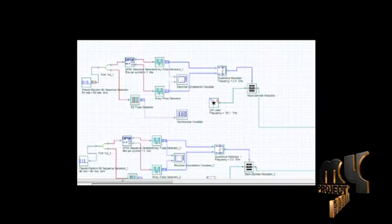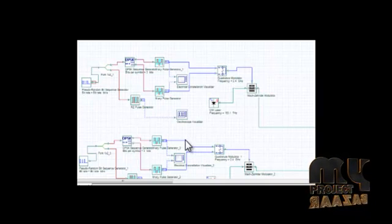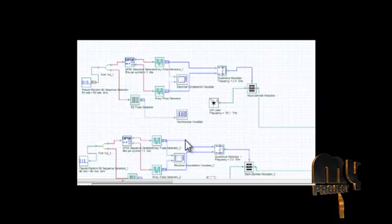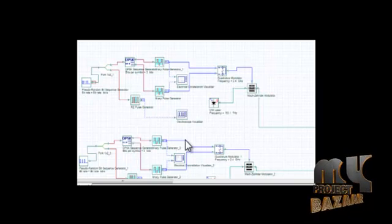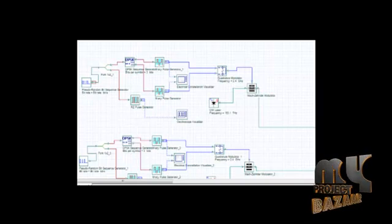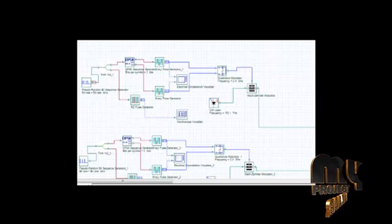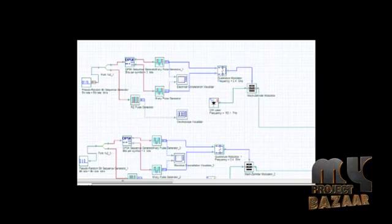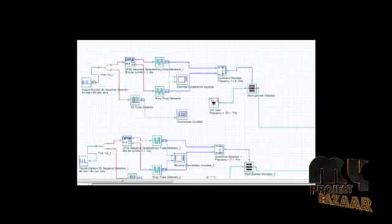The conventional way to measure the performance of the system is by using the eye diagram of this simulation. The eye opening clearly indicates the system performance. The constellation diagram is a representation of a signal modulated by digital modulation schemes such as Quadrature Amplitude Modulation or Differential Phase Shift Keying.